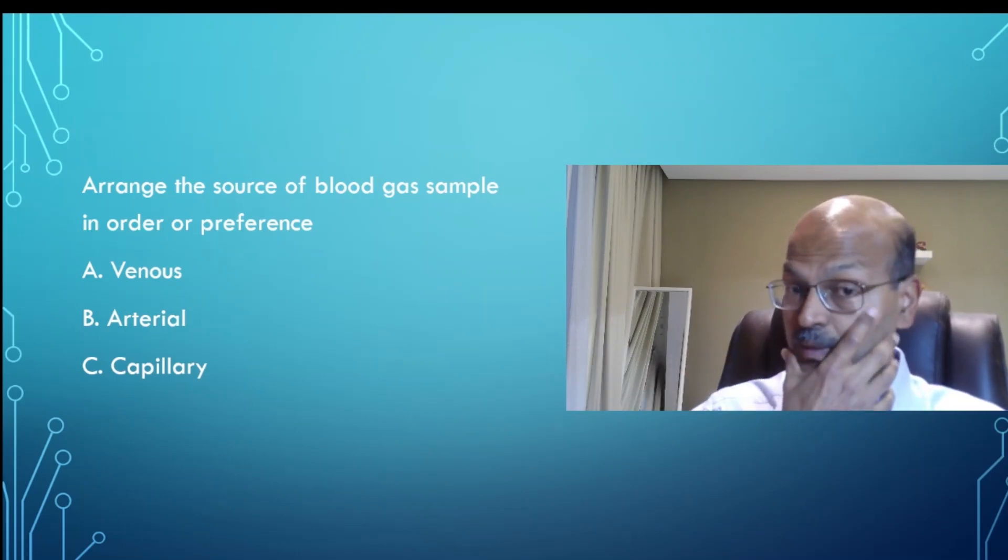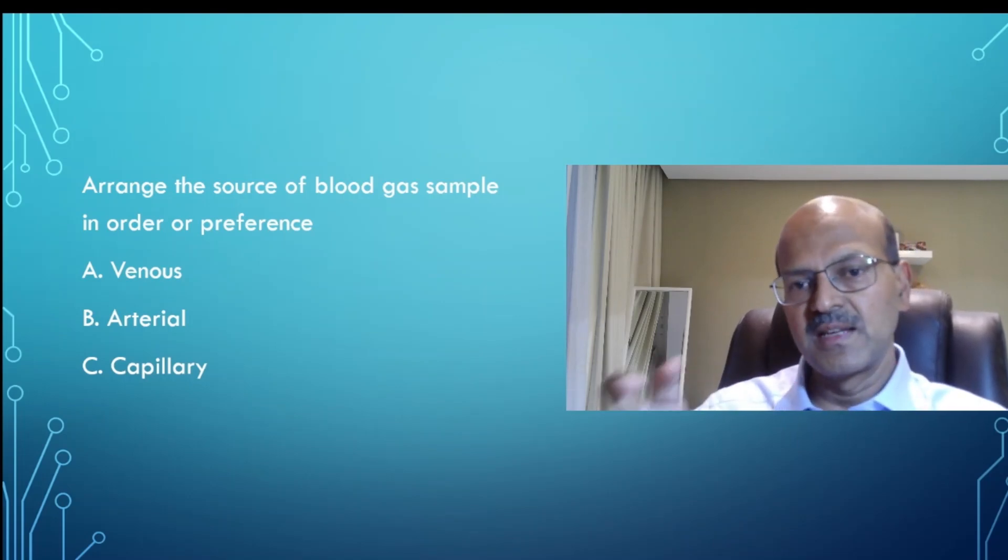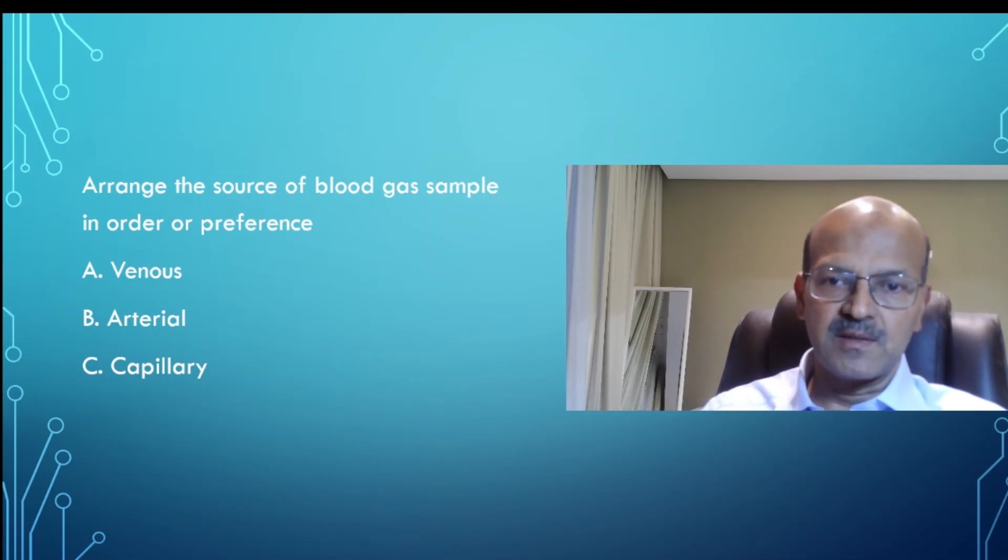Another important point about blood gas in babies on therapeutic hypothermia is to reset the machine setting to the temperature of the sample. So like 33 to 34 degrees or whatever you're keeping because the temperature affects the interpretation of the gas, how the blood gas machine runs it. The standard is fixed at 37 degrees, so you have to change it in the babies who are on cooling.